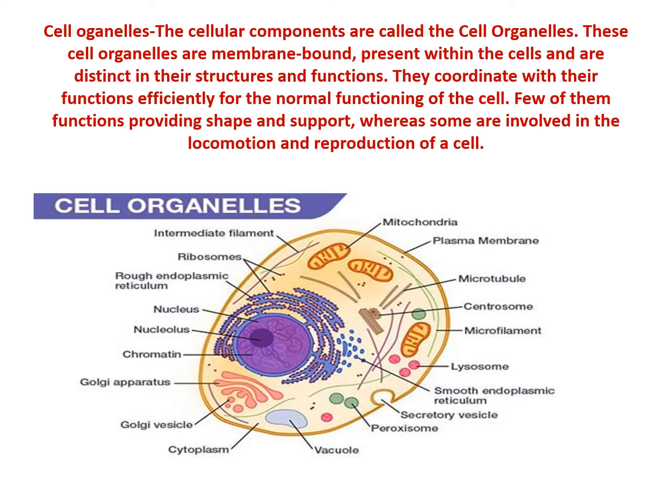Here in this slide, I have given a picture — the image of a cell — where I have labeled all types of cell organelles. We have ribosome, rough endoplasmic reticulum, nucleus, nucleolus, chromatin, Golgi apparatus, Golgi vesicles, cytoplasm, vacuole, and all other cell organelles. In this session, we will be discussing the functions of these cell organelles, as that is the scope of our study.